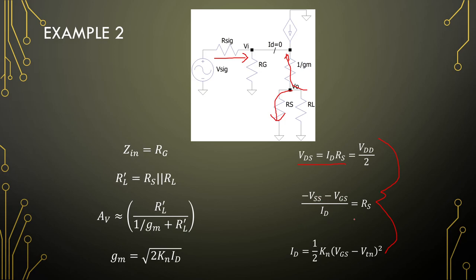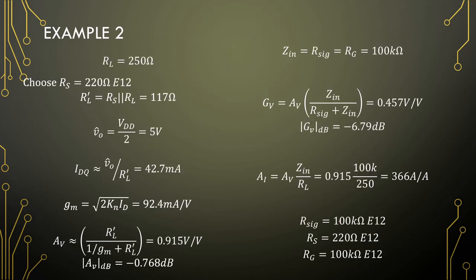VSS minus VGS over ID gives our RS value, so RS here is purely used to set the current. To get VGS, assume saturation. For the design, the best approach is typically to choose the source resistor equal to or less than the load resistor. With a 250 Ω load, the closest E12 value is 220 Ω, giving a loaded resistance of 117 Ω.